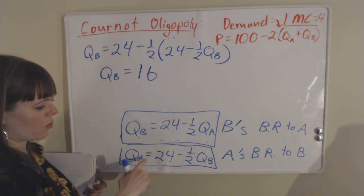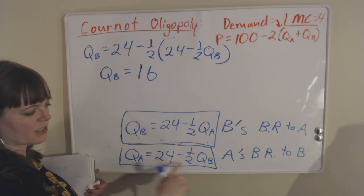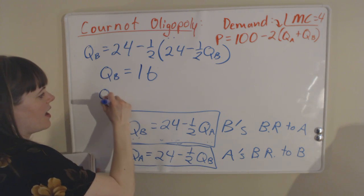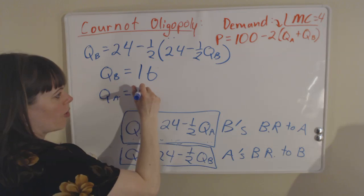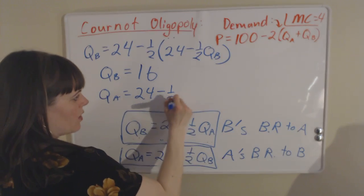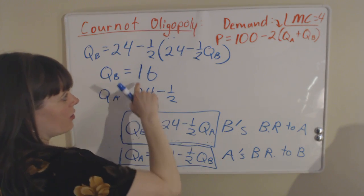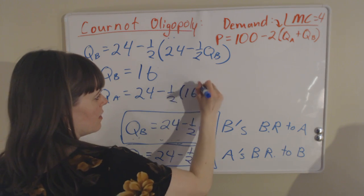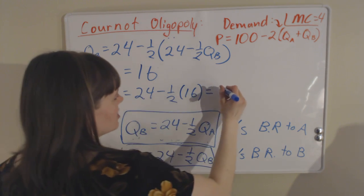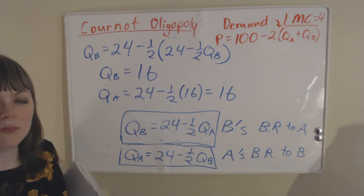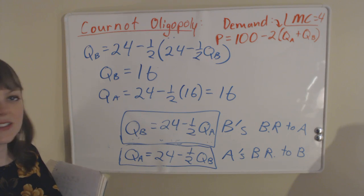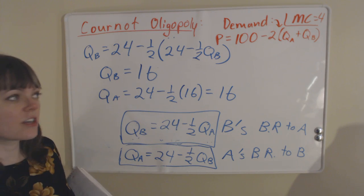Then I can just plug that quantity back into firm A's best response function. So QA equals 24 minus 1 half QB, and we know that QB is 16. So QA is actually also going to equal 16. Both firms produce 16 in this industry, and now all we need to know is the price.